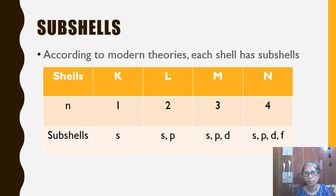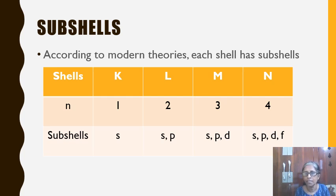Now the next topic: subshells. According to modern theories, each shell has subshells. The first shell K has only one subshell, S. L has 2 subshells: S and P. The third shell M has 3 subshells: S, P and D. And N has 4 subshells: S, P, D and F.